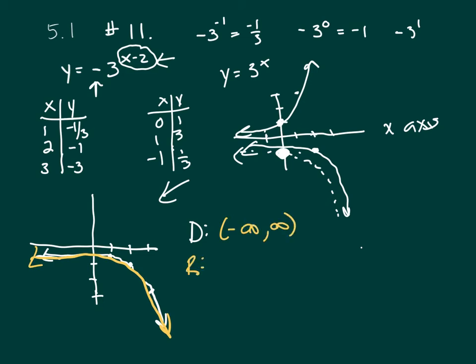Your range. Does it ask for that? The range is your y values. Your graph is only in this part of the coordinate plane. So the range starts at negative infinity and it goes up to 0 but it never crosses the x-axis. So 0 is not included.